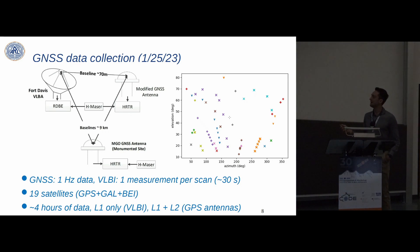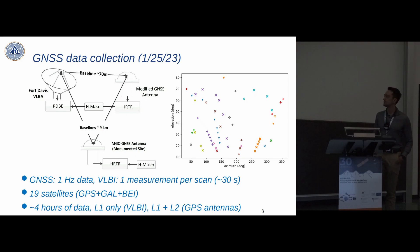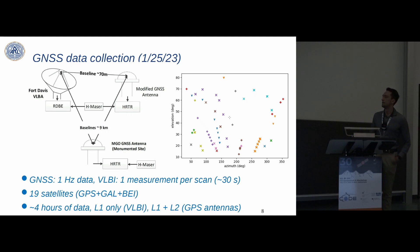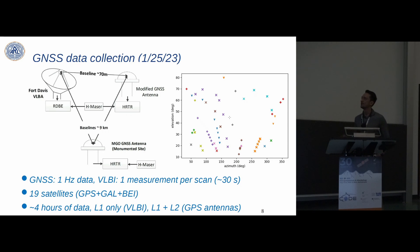On the right is an elevation-azimuth plot for all observed satellites at the radio telescope. We observed 19 total satellites from GPS, Galileo, and BeiDou systems. Different colors represent different satellites; different shapes represent different systems — X's are GPS, pluses are Galileo, and a three-pointed shape represents BeiDou.